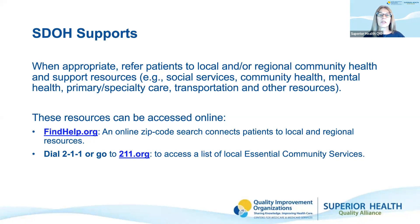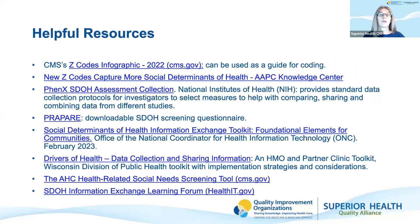If appropriate, you can refer patients to local and/or regional community resources, such as social services, community or mental health, primary or specialty care, and more. Gathering a list of your local community resources into one document can be a handy tool for referring patients. These resources can be accessed online by staff or shared with individuals and families. Findhelp.org is an online zip code search to help locate local and regional resources. Dial 211 helps direct callers to appropriate agencies and community organizations according to needs. There are also other resources included in the guide that offer more information on the collection of Z-Codes and examples of patient screening tools.